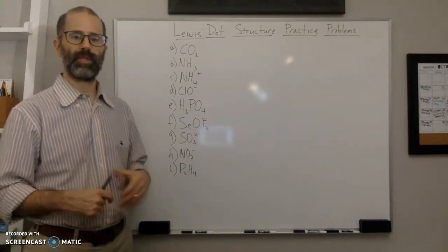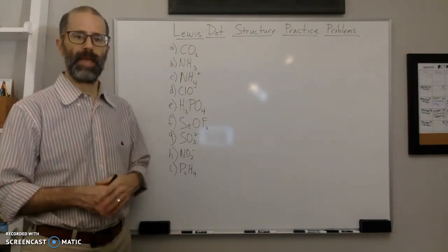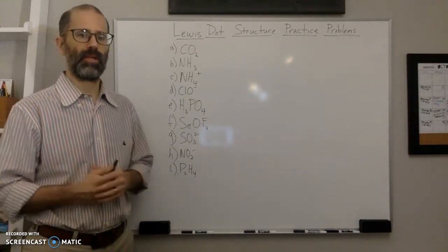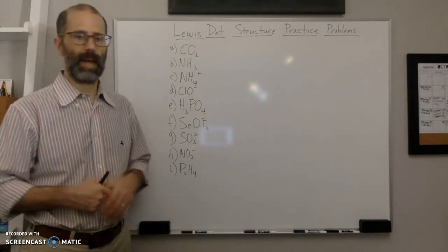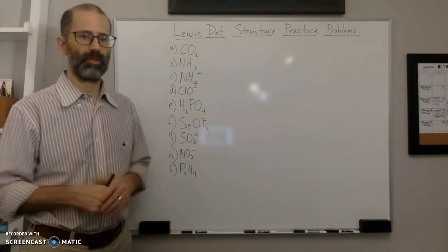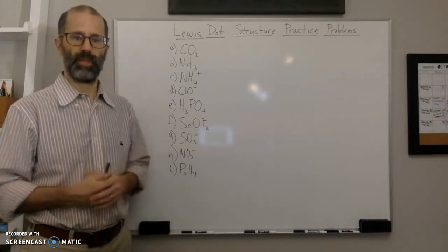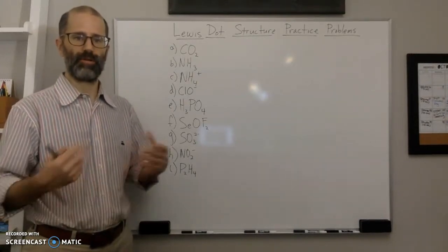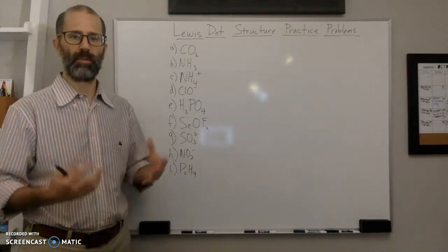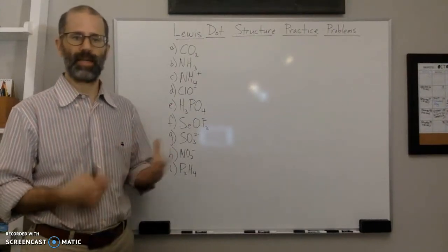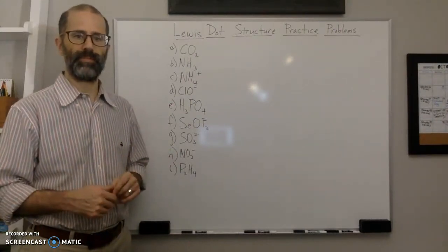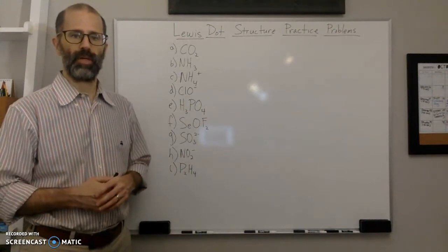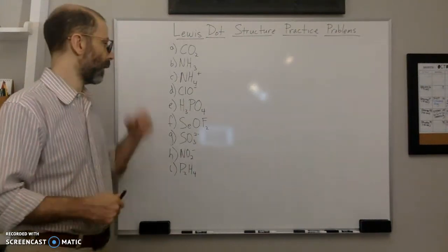In this video I just want to focus on the basic steps and how to get a legitimate Lewis dot structure. It may not be the best Lewis dot structure, but it will be a legitimate one that allows every atom in it to have an octet or a duet. That's the goal.